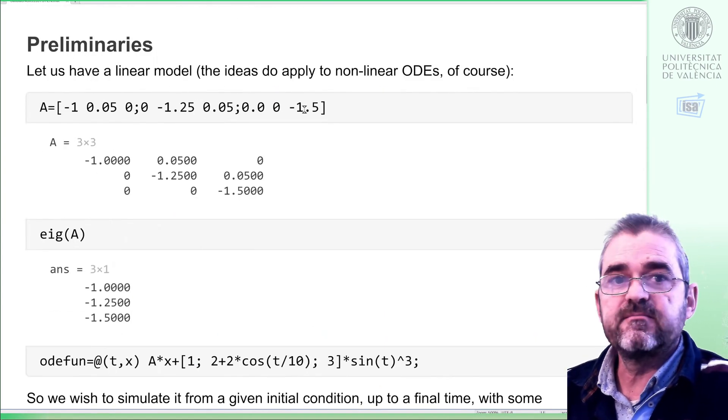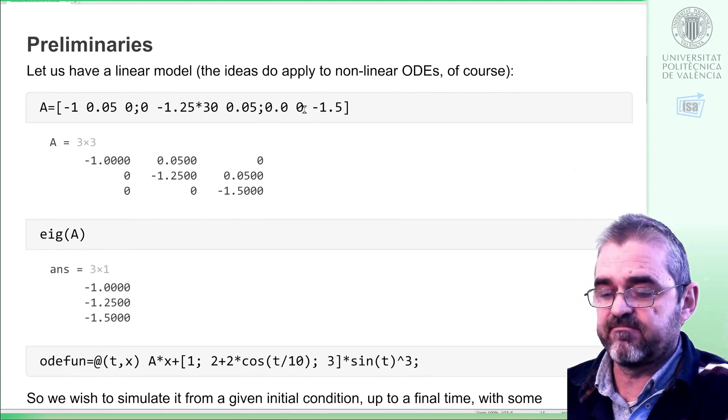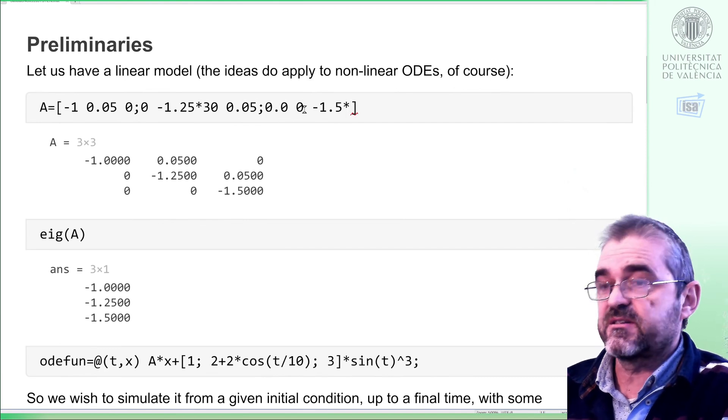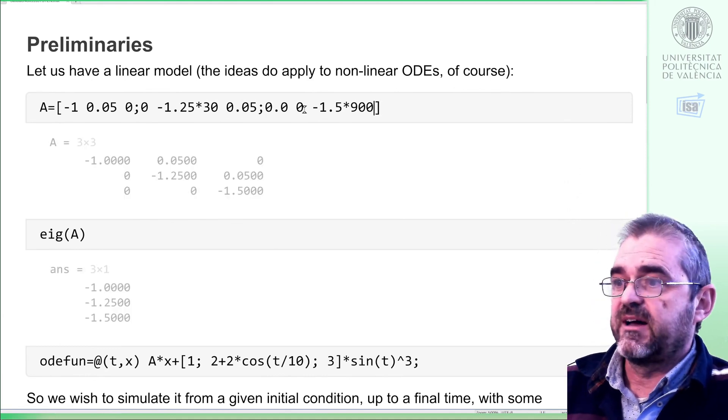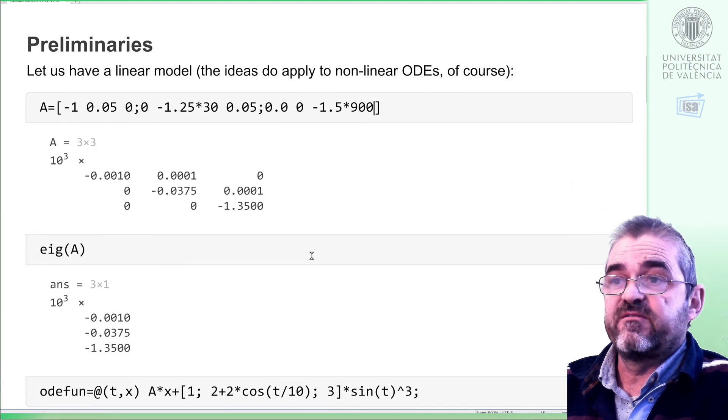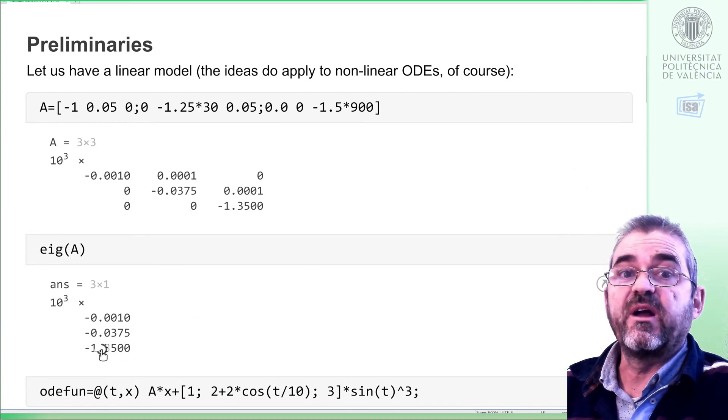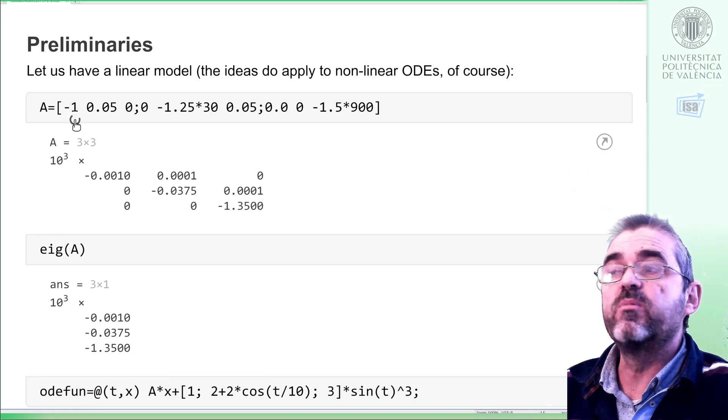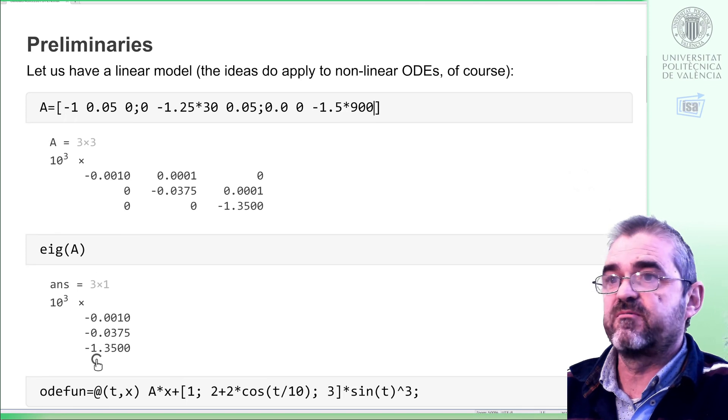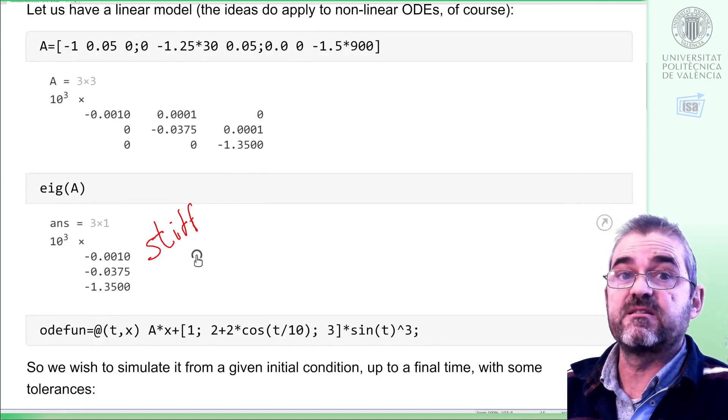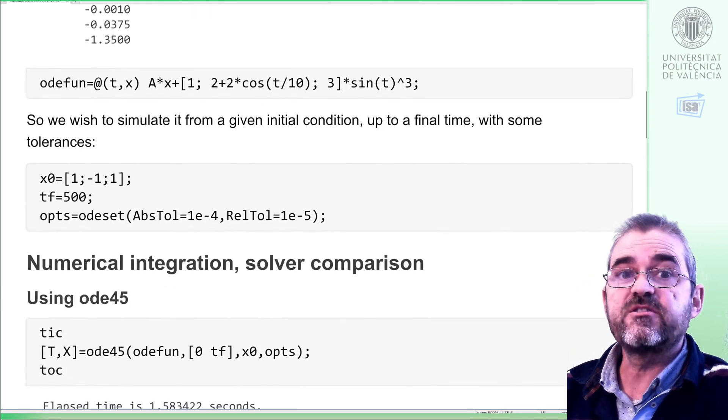But let us now consider a stiff problem in which I make this time constant 30 times faster, and I make this other one 900 times faster. So I have 1 to 1.5 different in time constant in the previous example. And in here, it's more than 1000, the difference between the slow pole at minus one and 1,350. So now this is a stiff case. Let's see how the two solvers behaved. Same initial conditions, same tolerances.